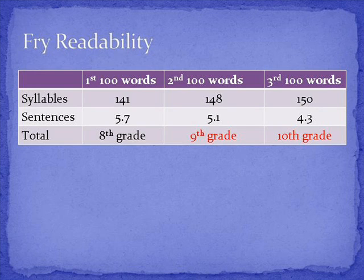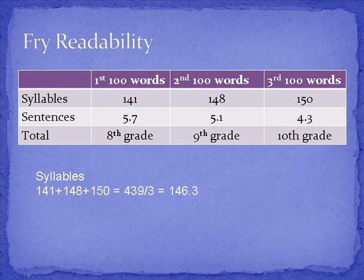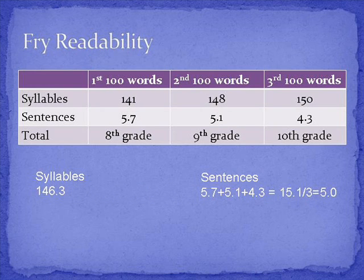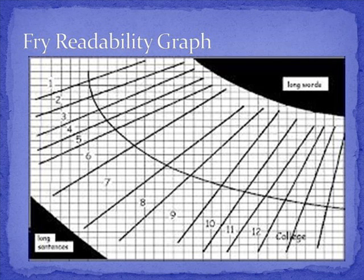Personally, when I get three different reading levels within one chapter, as this data shows, I do a 4th 100 word passage to help handle any outliers, such as multisyllabic words, that are skewing the data. However, you can average this to have an idea of the readability of the storms chapter. To find the average readability score, add the syllables together and divide by three, then average the number of sentences, then use the Frey graph to find the reading level. Pause the video clip to find it. You should have a 9th grade reading level score.